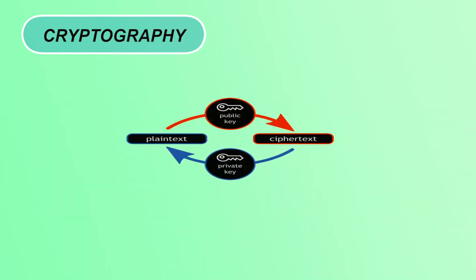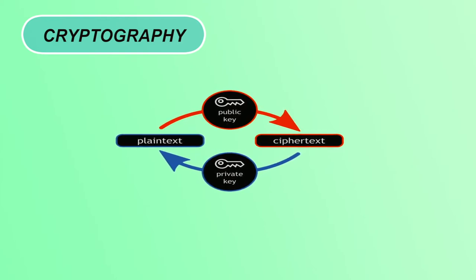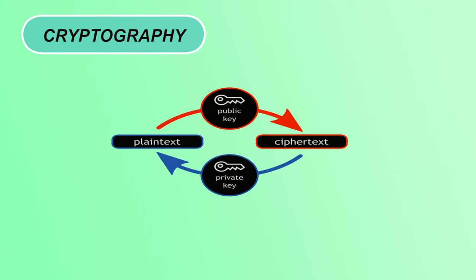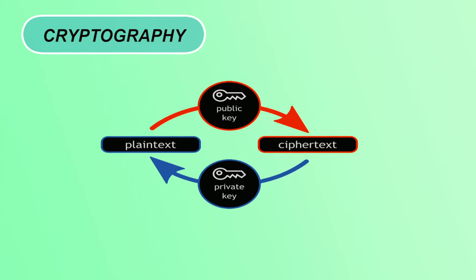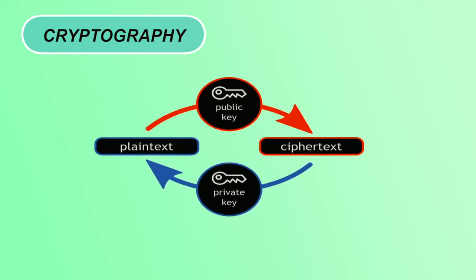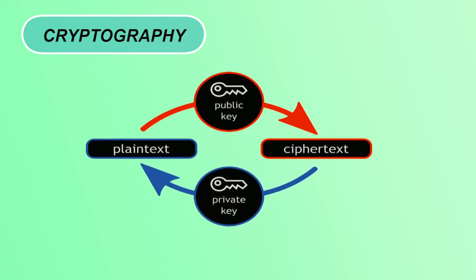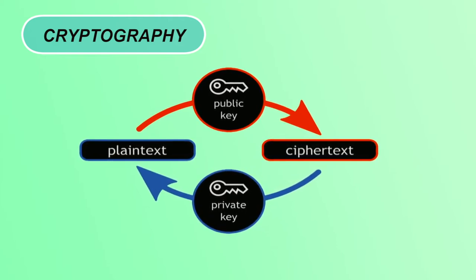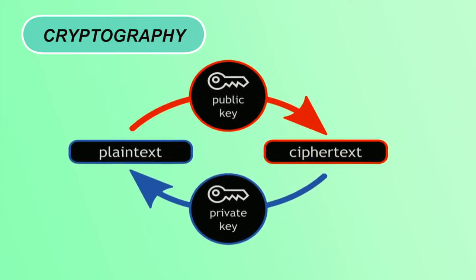In this figure you can see some terms like plaintext, ciphertext, public key and private key. I will explain all these terms in detail in further slides. Basically, the original message which we are trying to convert into non-readable form to prevent it from attackers is called plaintext, and the converted form of message is known as ciphertext. We can perform this process with the help of a key. Now let us discuss the importance of cryptography.